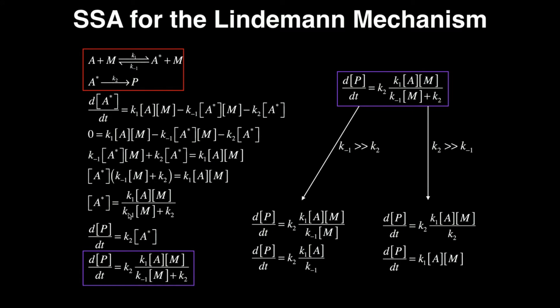divided by K-1[M] plus K2, that entire quantity. And that is my expression for the concentration of the intermediate, which happens to be A star in this reaction. Now my overall rate of the reaction should be the formation of the product. That's what I'm concerned with. So the rate of change of the concentration of the product with respect to time, so the rate of formation of P with respect to time is equal to K2[A*], right? K2 times A star.